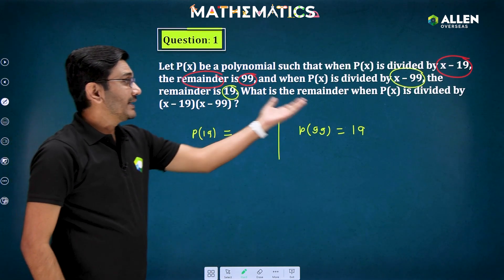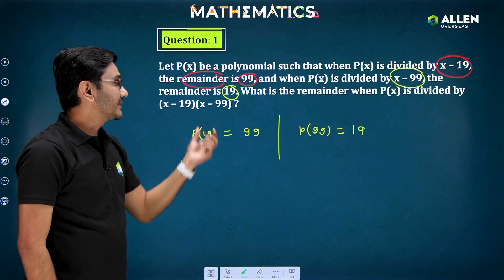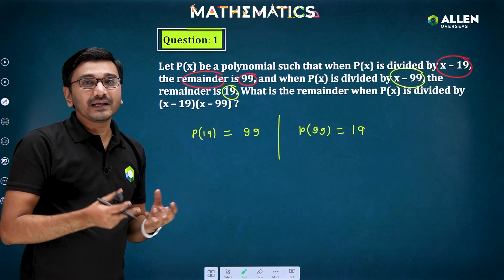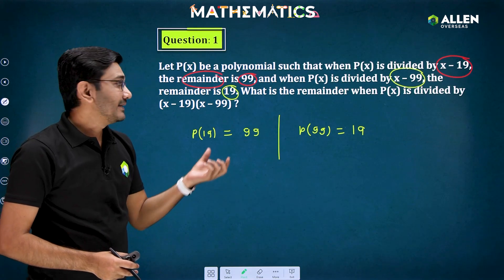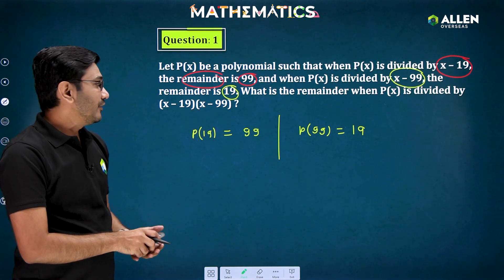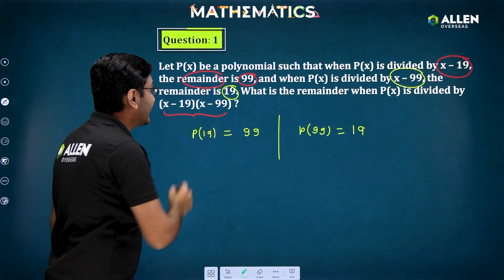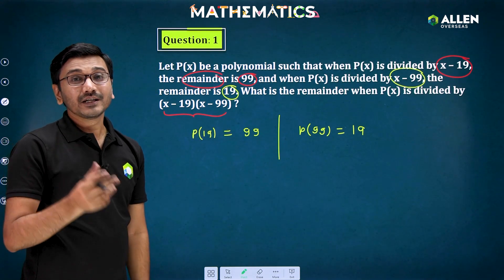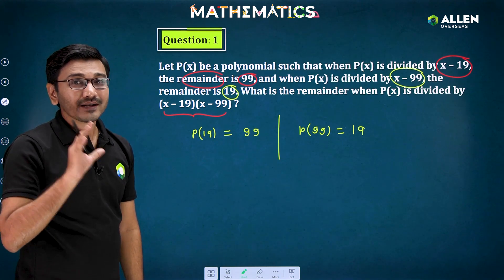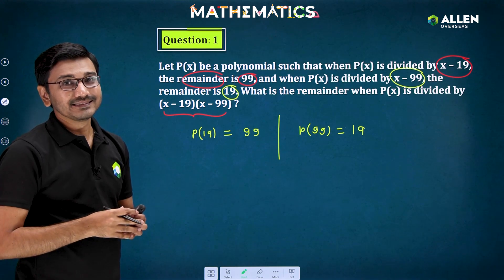The question is: what is the remainder when p(x) is divided by (x minus 19)(x minus 99)? You are dividing that polynomial by the product of both factors, which is a quadratic term. Whenever you divide by a quadratic term, the maximum remainder you may get is a linear term.